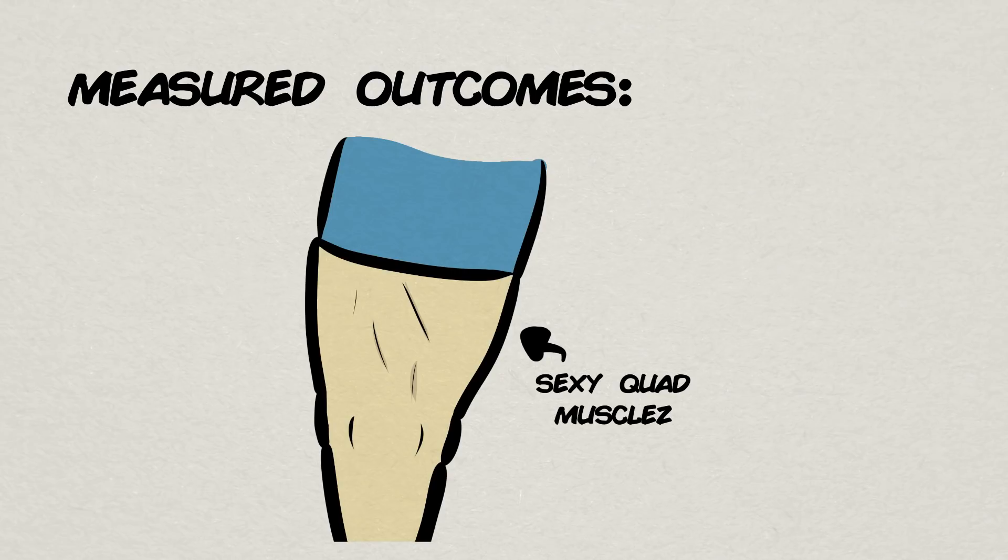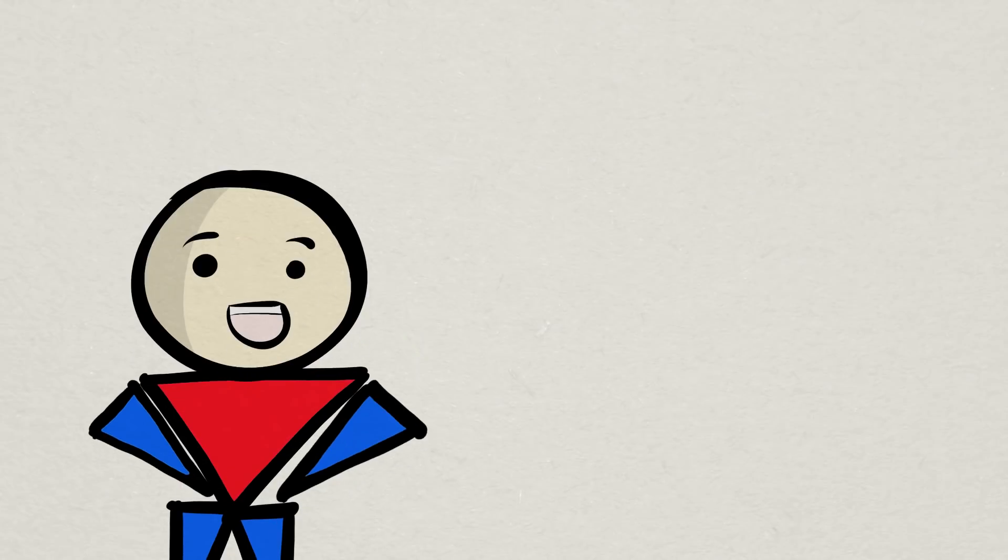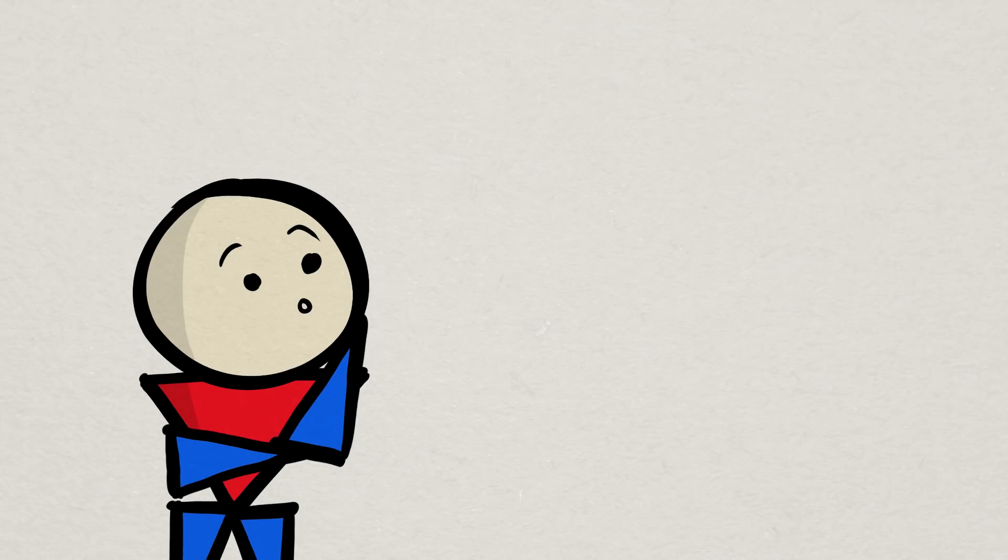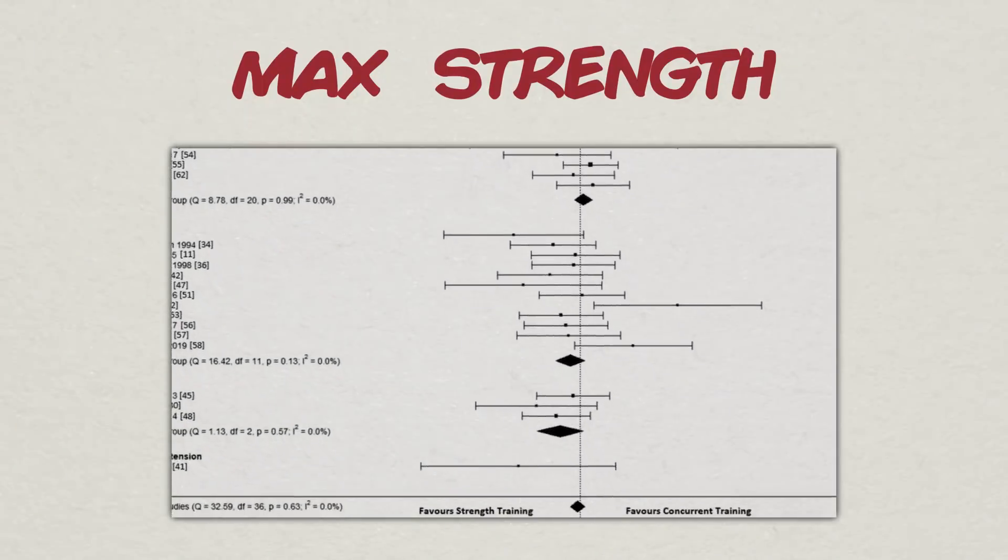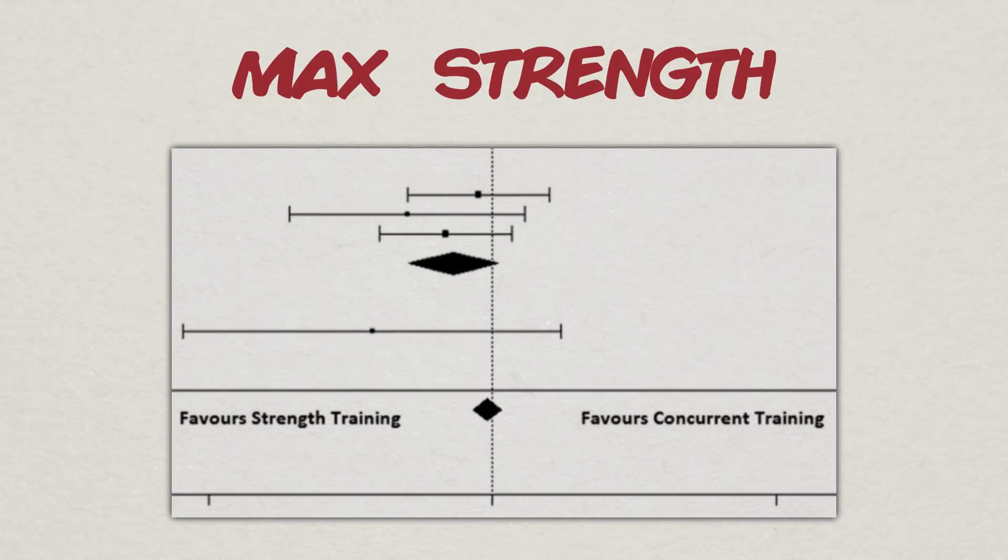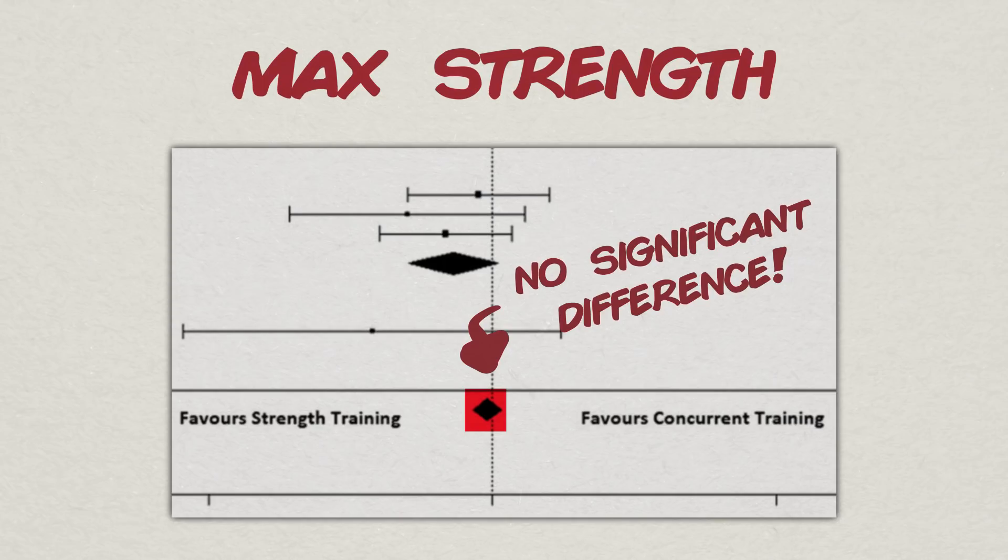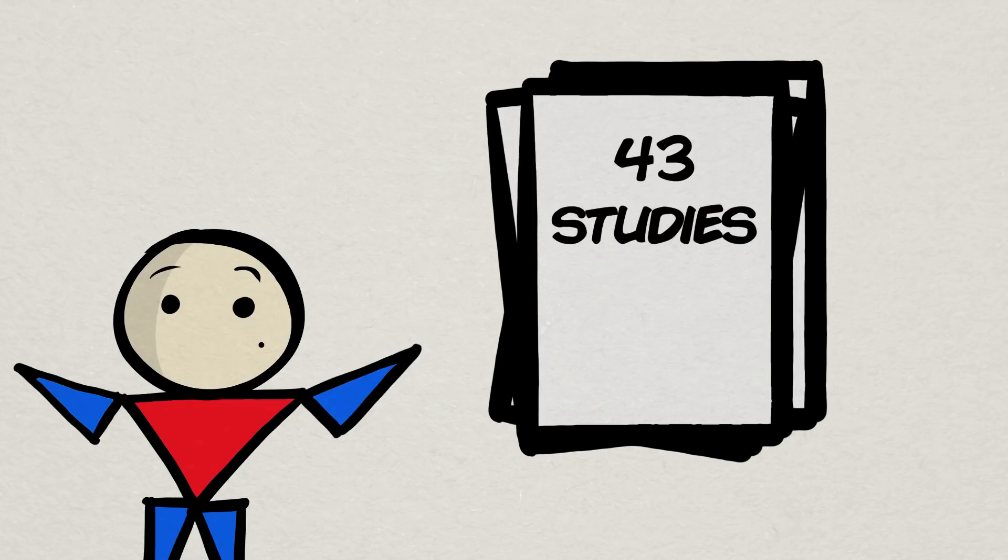In the end, the results of two of the three measured outcomes might not be too surprising, but the third one has a slightly interesting twist. Maximal strength, as shown in this cool forest plot of the relevant studies, appeared to have no difference in outcome between concurrent training compared to strength training only when taking all the data into consideration.